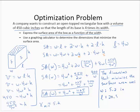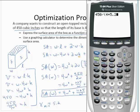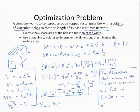And then for the height, well, the height is 450 divided by 4 times the width squared. So 4 times 5.2 squared. And that's 4.16. So the height, 4.16 inches.